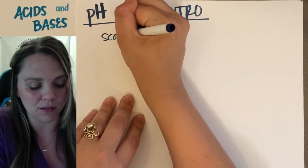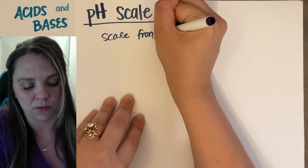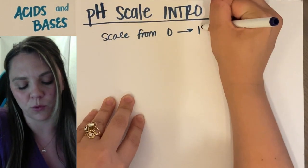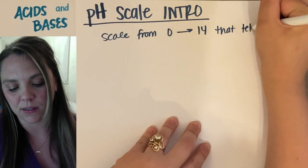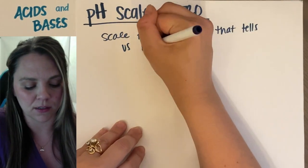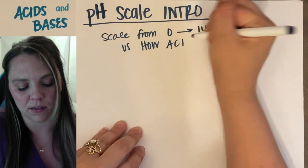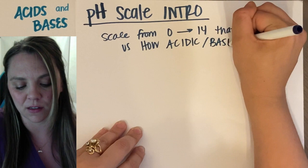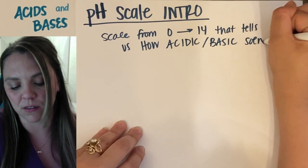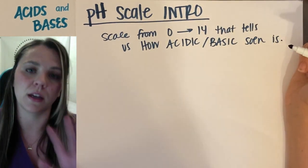The pH scale is a scale from 0 to 14 that tells us how acidic or basic the solution is, or any solution is.